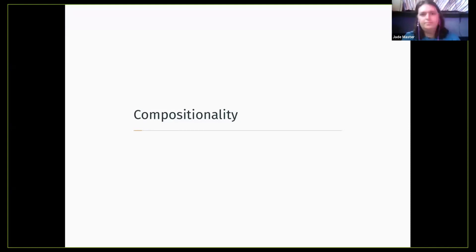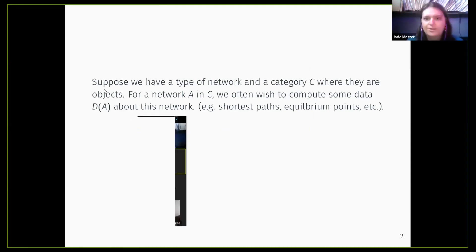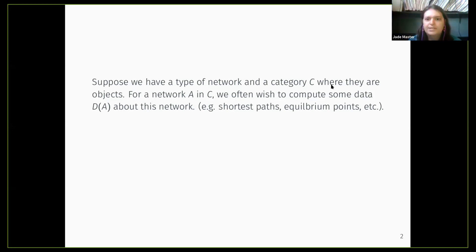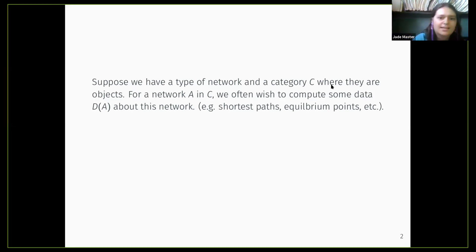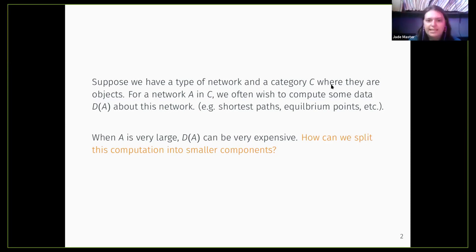The first section is compositionality. The idea is basically that you have some type of network that lives in a category C — the category where your networks are objects. You're usually interested in computing something about that network, calling that D of A for an object A in C. Examples include shortest paths, equilibrium points, clustering coefficients, and so on. But the problem is that when A is very large, this computation of D of A can be very expensive. A common strategy is to split the computation into smaller components and then glue them together to get the global computation.